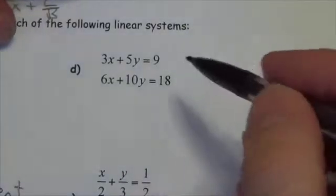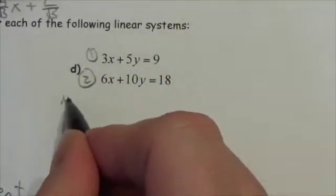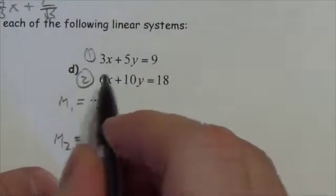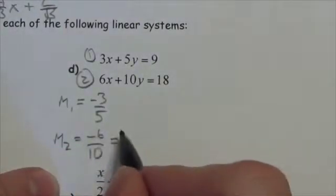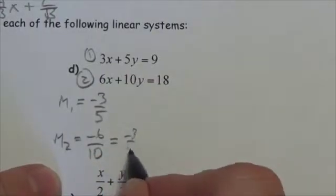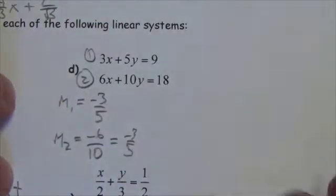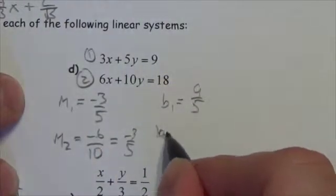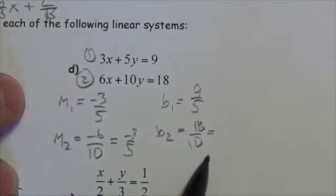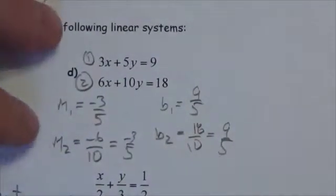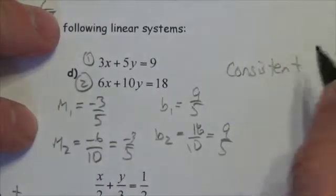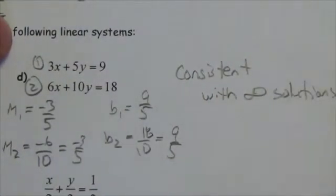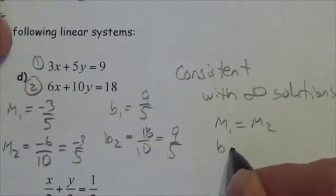For system d, the slope of line one is −3/5. The slope of line two is −6/10, which simplifies by a common factor of 2 to −3/5 — same slope. The y-intercept of line one is 9/5. The y-intercept of line two is 18/10, which also simplifies to 9/5. Same slopes and same y-intercepts, so this is a consistent system with infinite solutions.